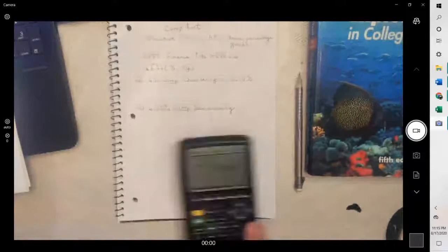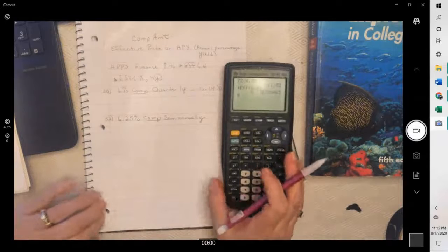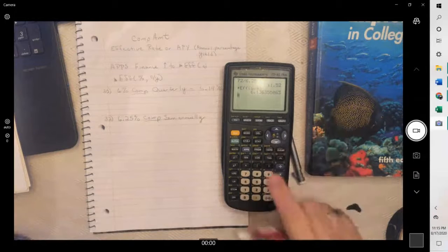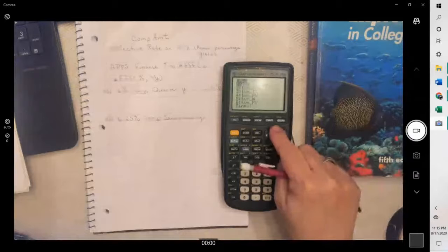Another one. Six and a quarter percent, comma, semi-annually is twice a year. And hit enter. And we get 6.35%.